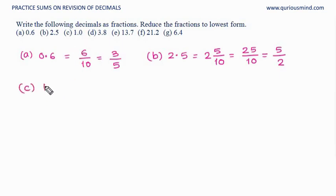C, 1.0. 1 is the whole and at 10th place we have 0. 0 upon 10, but 0 upon 10 is 0. So it is actually 1.